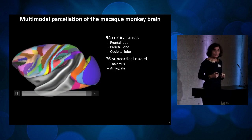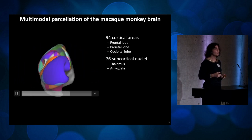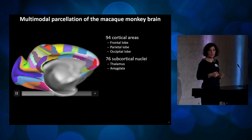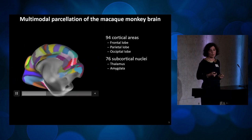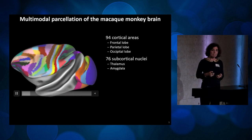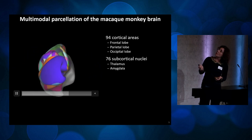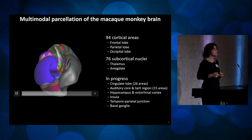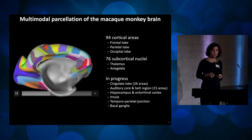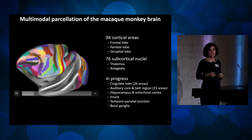The result of this work is that we've already mapped and published 94 cortical areas covering the entire frontal lobe, the parietal lobe, and the occipital lobe. We've got a total of 76 subcortical nuclei - those of the thalamus have already been published, and those for the amygdala I'm currently working on. Luthia has identified a total of 26 areas in the cingulate cortex and is writing the manuscript. We're also working on the auditory cortex, the hippocampus, the insula, the temporal parietal junction, and the basal ganglia.